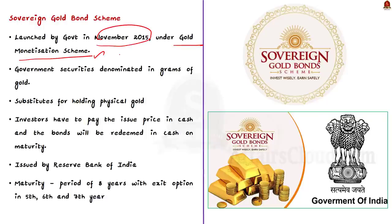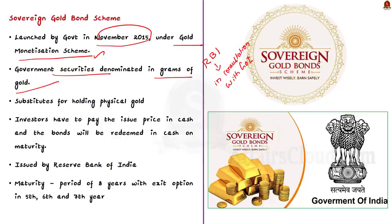Under the scheme, issues are made open for subscription in tranches by the RBI in consultation with the Government of India. Sovereign Gold Bonds are government securities denominated in grams of gold — they are substitutes for holding physical gold. Investors have to pay the issue price in cash and the bonds will be redeemed in cash on maturity. The bond is issued by the Reserve Bank of India on behalf of the Government of India. The tenor of the bond is eight years with exit options in the fifth, sixth, and seventh year.